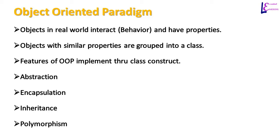Objects with similar properties are grouped into a class. Different behaviors of objects and their interactions in the real world are implemented by following the concept of a class. The class construct provides the following four features of object-oriented programming: abstraction, encapsulation, inheritance, and polymorphism.